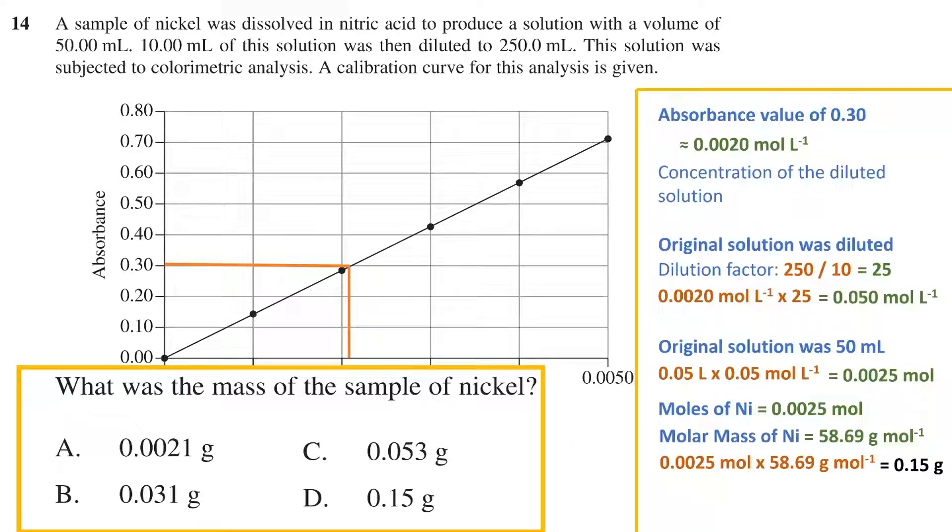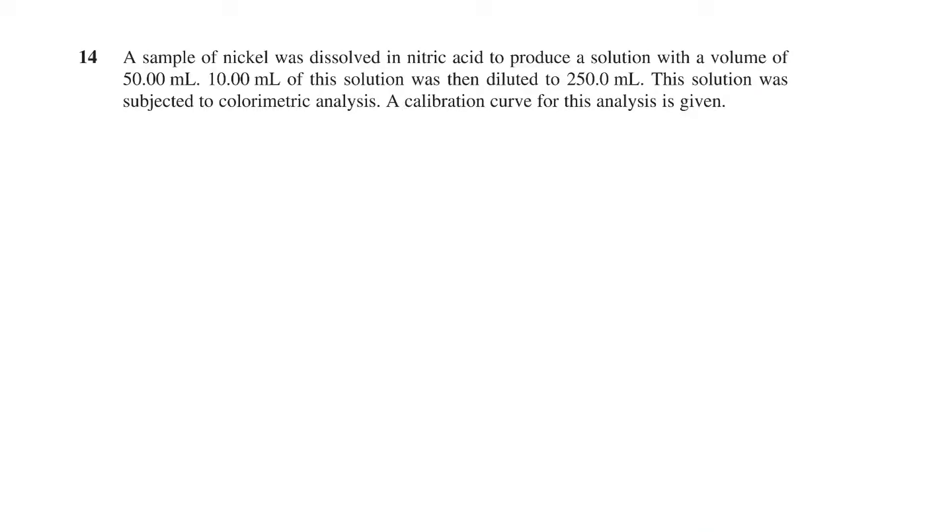Looking back at our four options, this means that option D is the answer. To understand this all a little better, let's go through the steps in the process visually, and also expand upon the steps we took to calculate the final answer. Firstly, the question states that we have a sample of nickel. This is dissolved in 15 milliliters of nitric acid, so let's picture that.